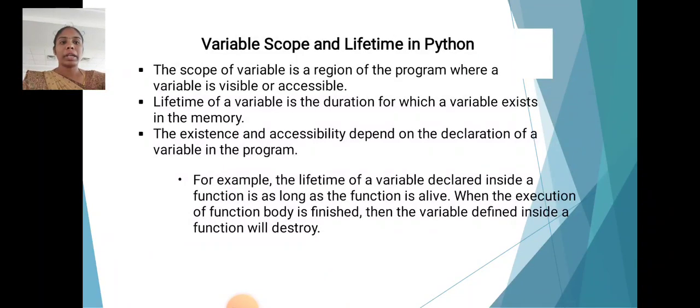Variable scope and lifetime in Python. The scope of a variable is the region of a program where a variable is visible or accessible. Lifetime of a variable is the duration for which a variable exists in the memory. This extensibility and accessibility depends on the declaration of a variable in a program.